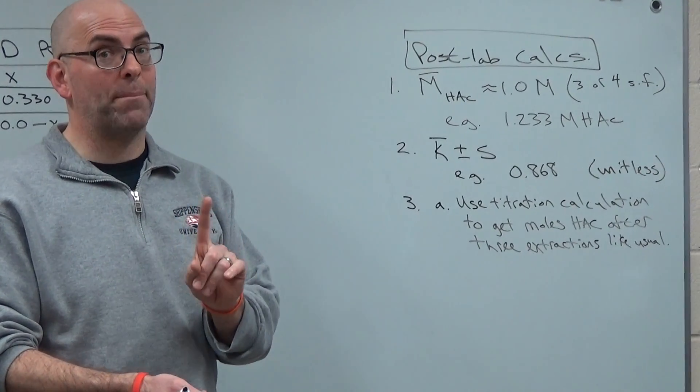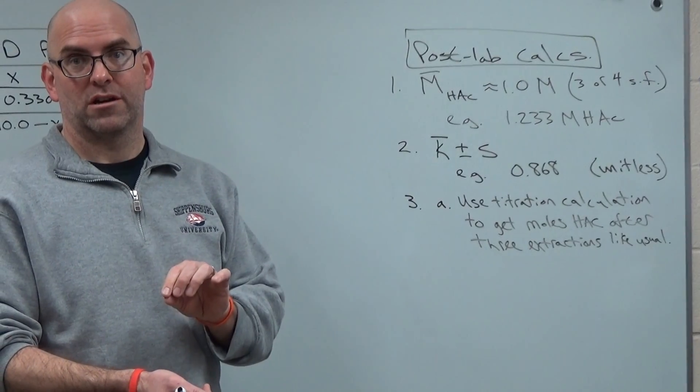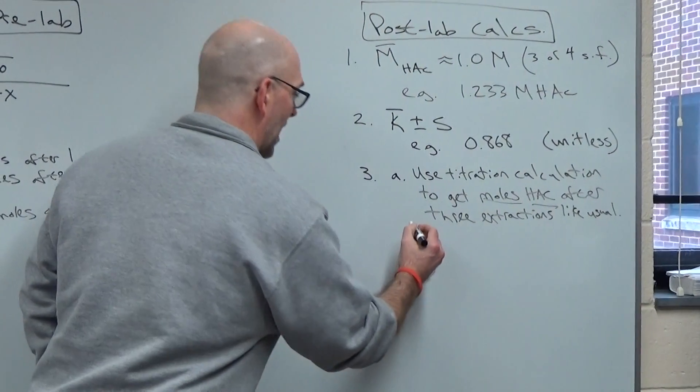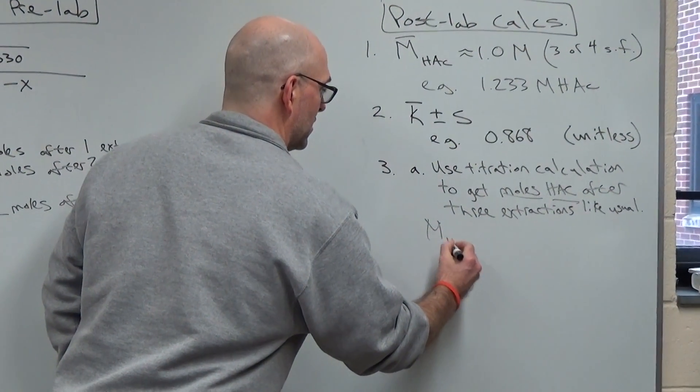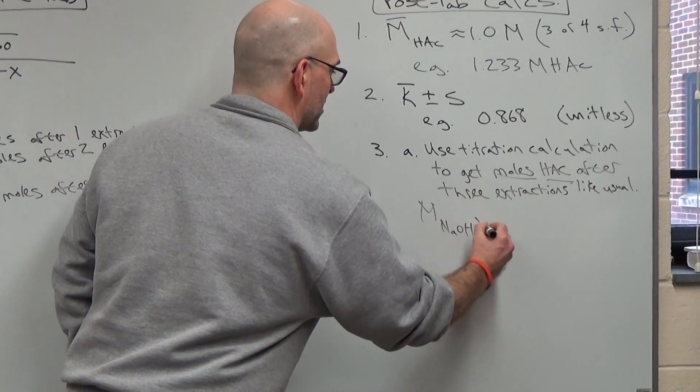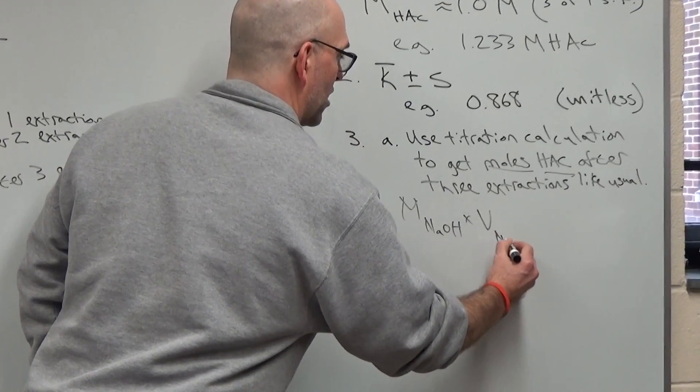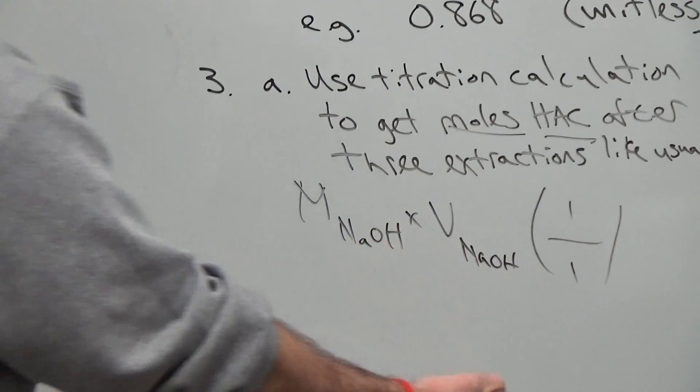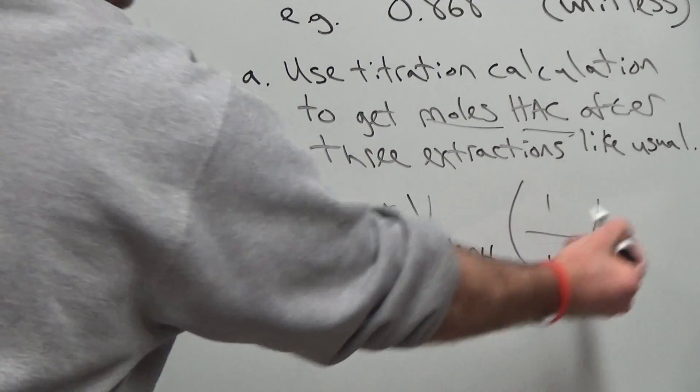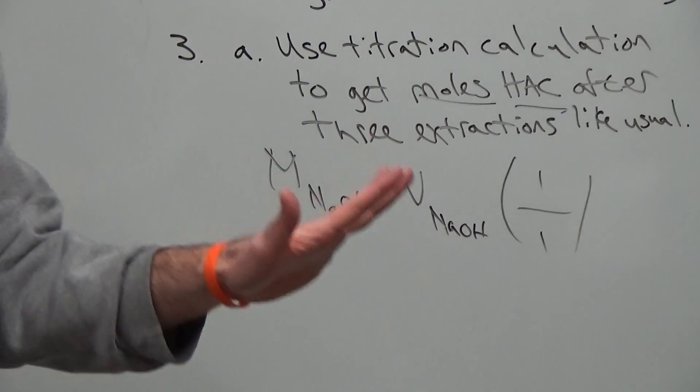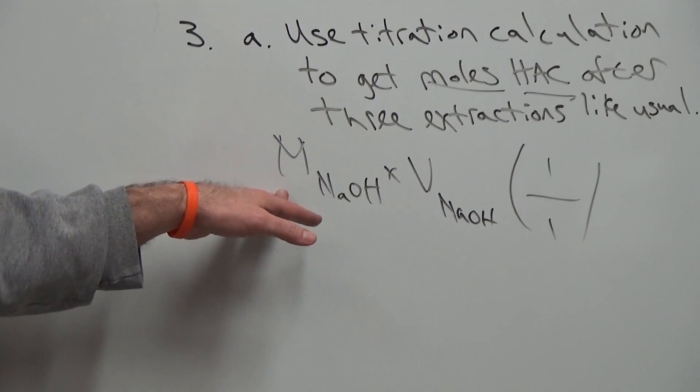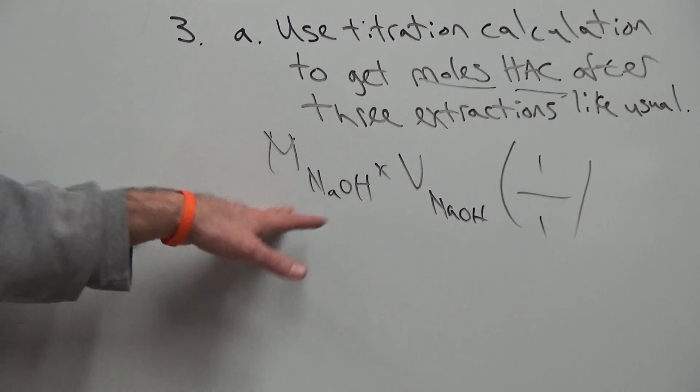So we're not calculating a molarity. So you're just getting the moles of HAC. So I guess I could just write that real quick. So you take the molarity of your NaOH times the volume of your NaOH times your 1 to 1 mole ratio, moles of NaOH, moles HAC, and stop there. That's all you do. It's a very simple calculation. You've done a titration calculation several times by now. That's all you do.